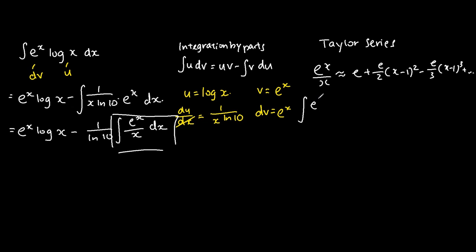And if we were to integrate the left hand side e to the power of x over x, the right hand side you know basically it's just e times x. That means we integrate the whole thing: e plus e over 2 times (x minus 1) squared minus e over 3 times (x minus 1) cubed plus dot dot dot, and if we were to integrate it.